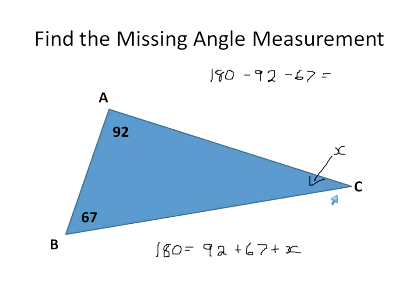We already know it's angle C because of the triangle, but the interior angle we could say whatever it is. So we would figure that out taking 180 and subtracting 92 and subtracting 67, and we would get that X is equal to 21.